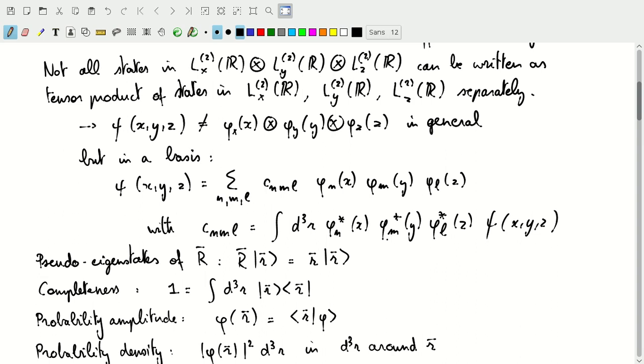There's many things that just translate from our one-dimensional to our three-dimensional system. We again have pseudo-eigenstates of R—those are our ket R, now they're vectors. The completeness relation becomes a three-dimensional integral over all of space, so we'll have our projection operator on R and then we'll integrate over R over all of space, and that will have to be an identity operator.